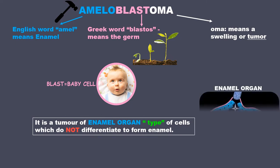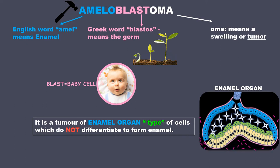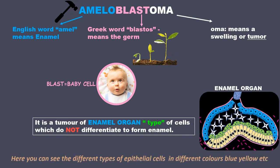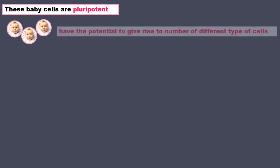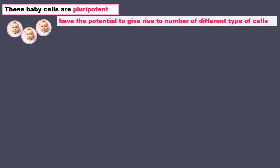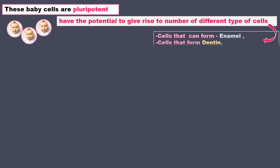This is an enamel organ. Here you can see the different types of epithelial cells inside it in different colors — blue, yellow, etc. These baby cells are pluripotent, which means that they have the potential to give rise to a number of different types of cells such as the cells that can form enamel, cells that can form dentine, cells that can form periodontal ligament, etc.